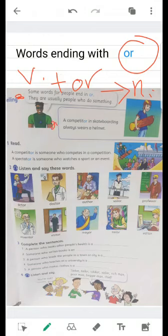Look at this sentence. A competitor. Competitor is a noun meaning someone who competes, while the verb is compete. What do we mean by compete? To compete. We add the suffix OR and it becomes competitor in skateboarding who always wears a helmet.